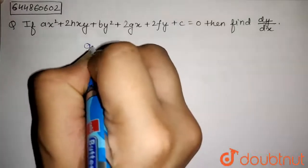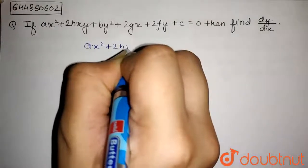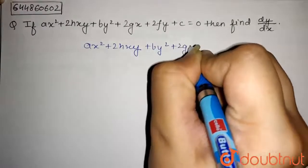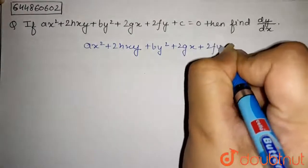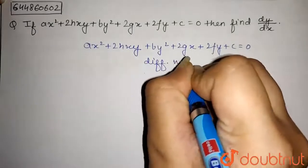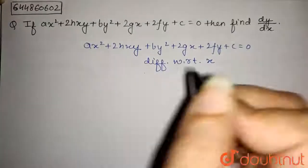We have the expression ax² plus 2hxy plus by² plus 2gx plus 2fy plus c equals to 0. Now, we will differentiate this expression with respect to x to find dy by dx.